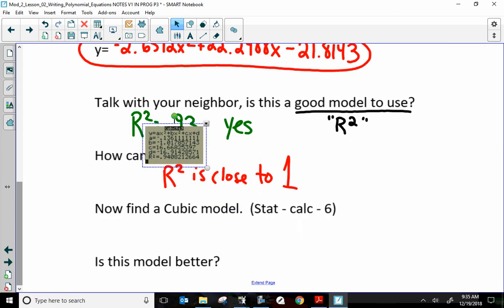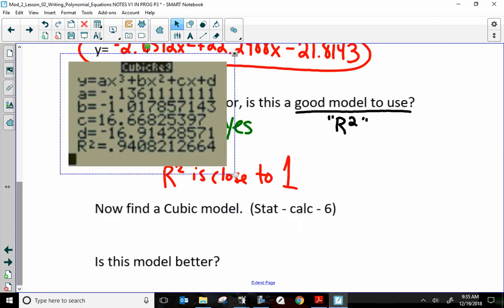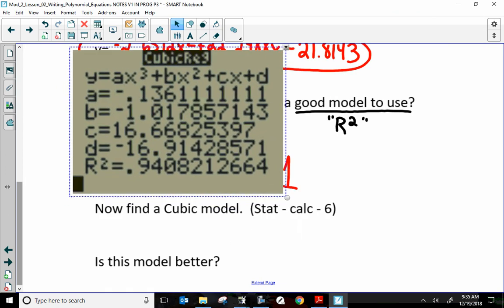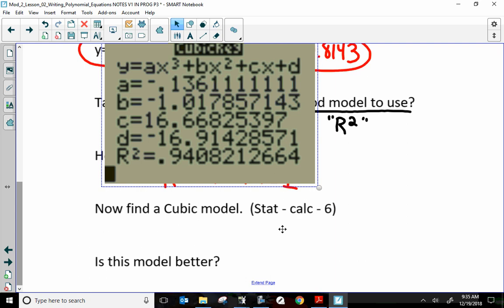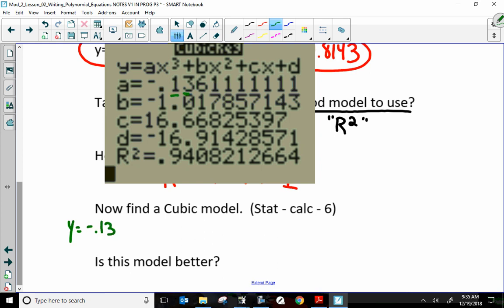Let's bring this back right here. Find a cubic model. Four decimal places. So, y equals, my a value, which is negative 0.13, 1, 3, 6, 1. That will stay a 1. x cubed.